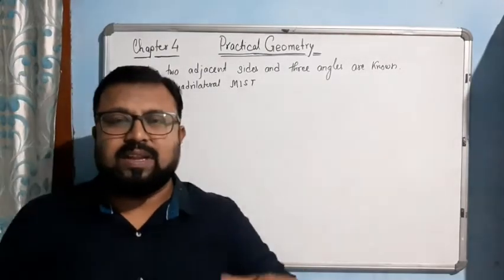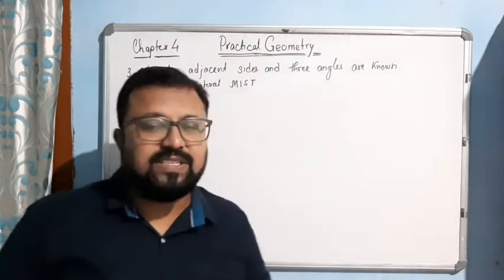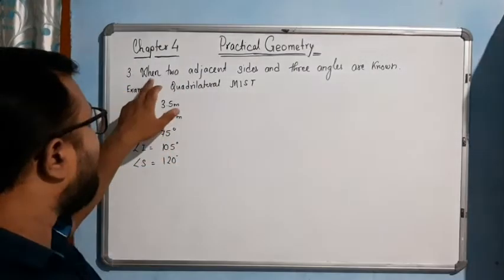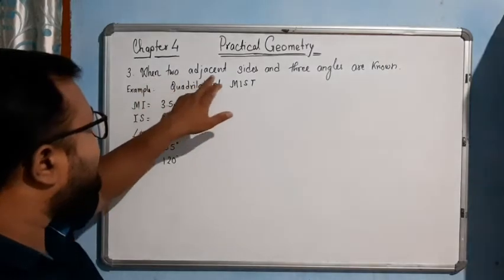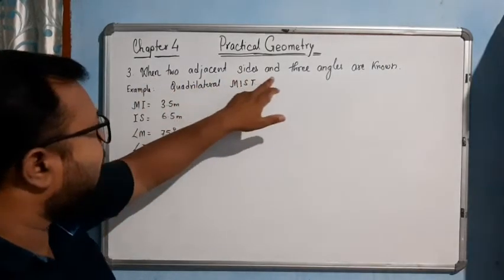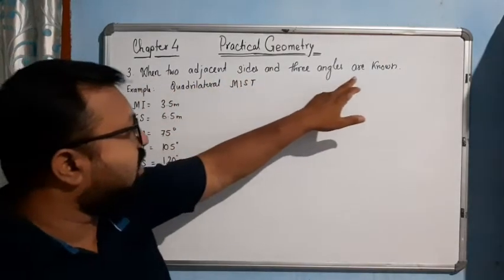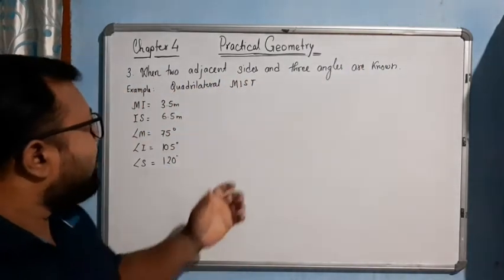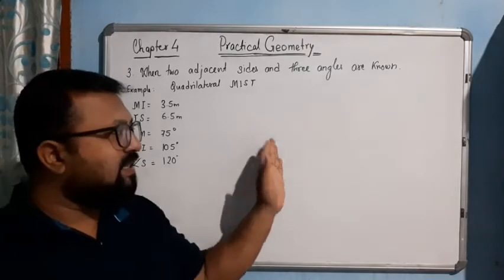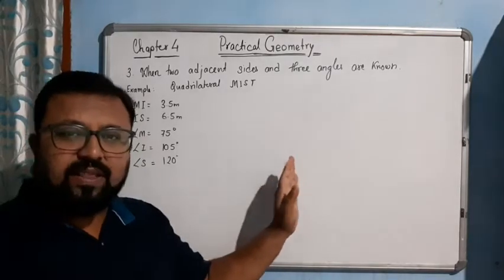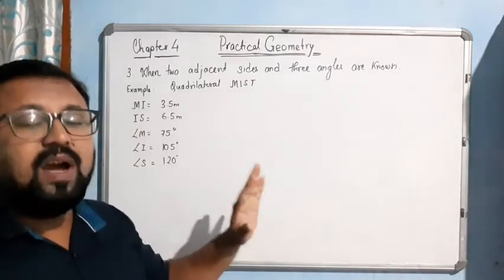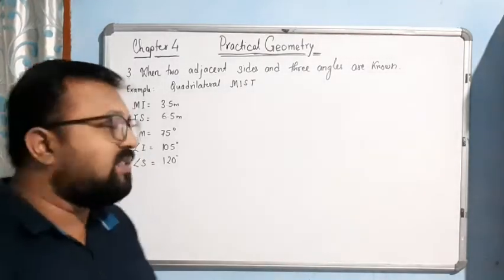Hello students, now we come to the next topic of this chapter. The next topic is: when two adjacent sides and three angles of a quadrilateral are given, how will we construct it?